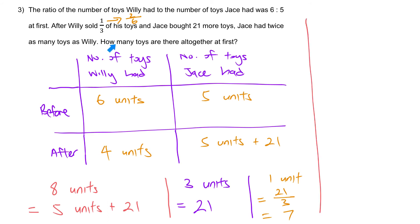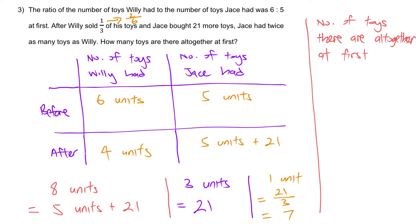How many toys are there altogether at first? There are 11 units in total. Number of toys altogether at first: 7 times 11 gives us 77 toys.